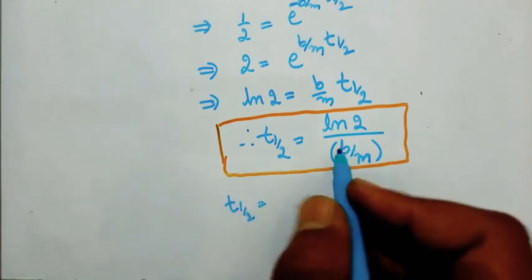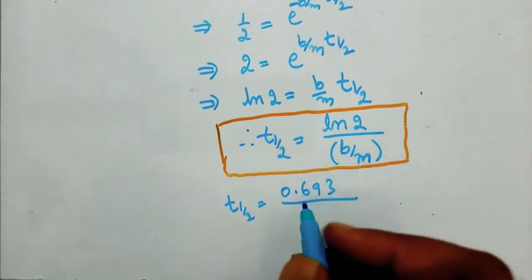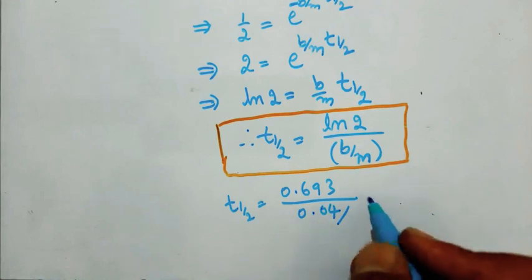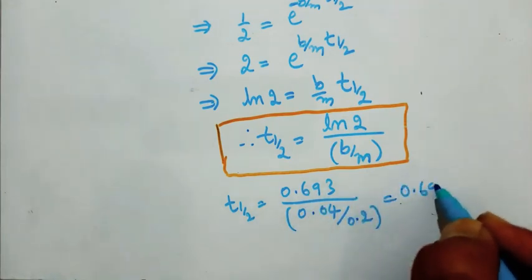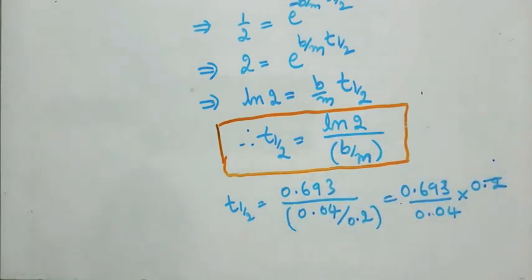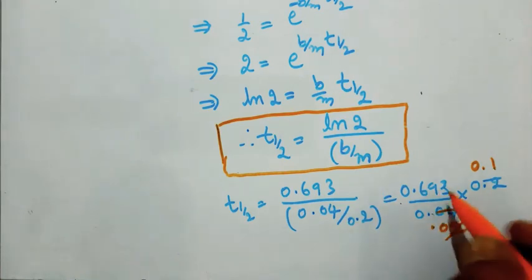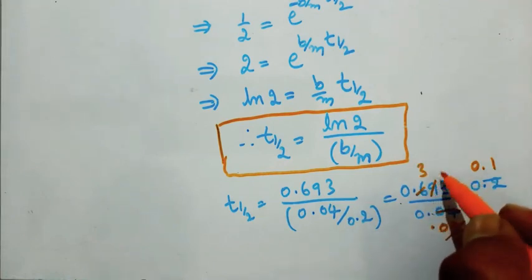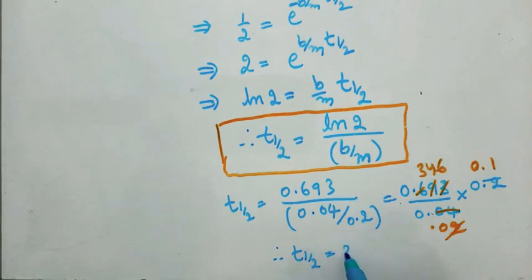Therefore T_half equals log 2 value 0.693, divided by B which is 0.04, divided by M which is 0.2. Calculating: 0.693 divided by 0.04 over 0.2 equals 0.693 divided by 0.2. Therefore T_half equals 3.46 seconds.